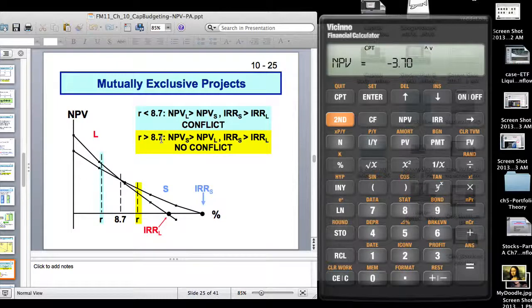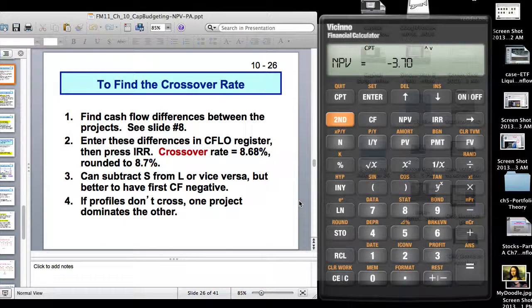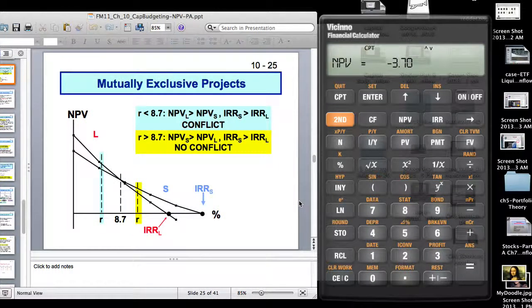To the right of 8.7, there is no conflict because NPV of this line, project S, dominates the NPV of L. And the internal rate of return also agrees. The internal rate of return of project S, which is 23 percent, is higher than 18 percent. No conflict. So what do you do when there is a conflict? The decision rule is whenever there is a conflict, you always defer to NPV. In this case, you would pick up project L.